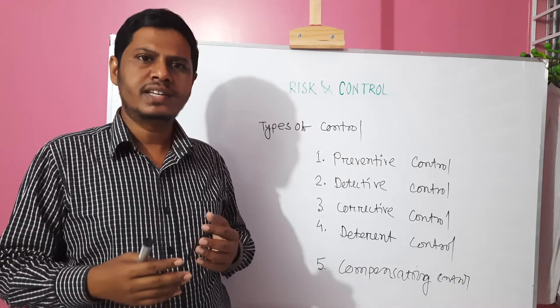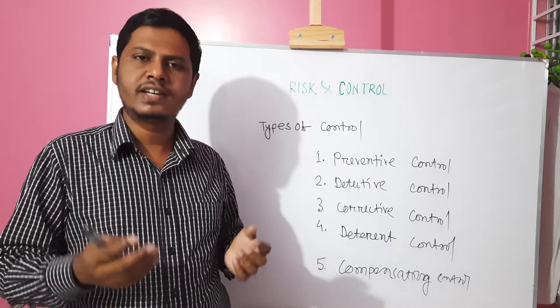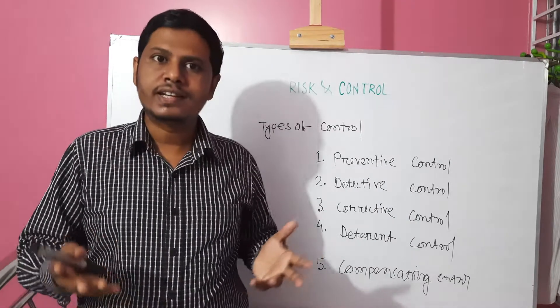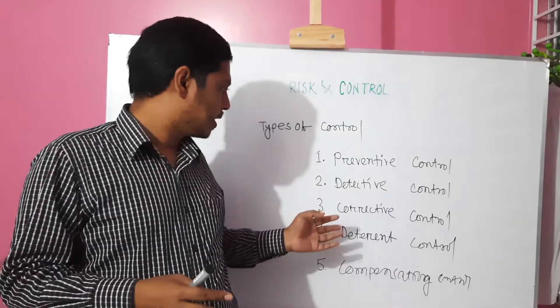Corrective control includes disaster recovery planning, business continuity planning, incident response planning, and data backup. These are examples of corrective control.